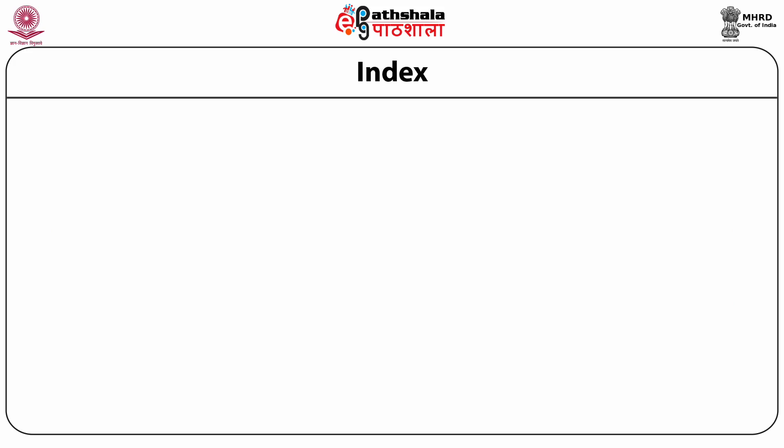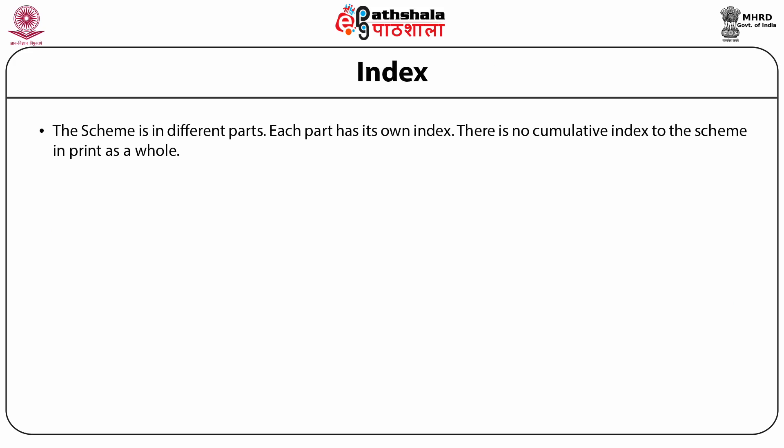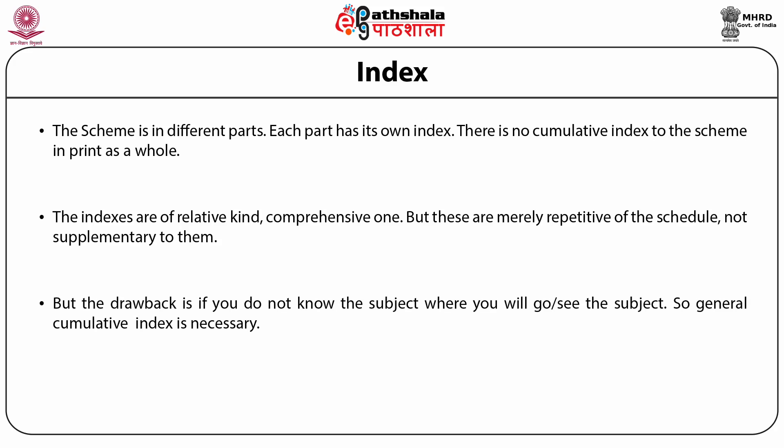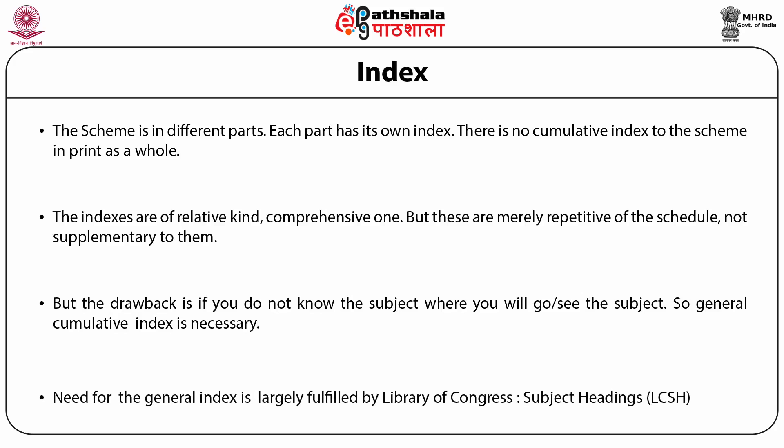Index: Index is an important part of any classification system. The Library of Congress scheme is in different parts and each part has its own index. There is no cumulative index to the scheme in print as a whole. The indexes are of a relative kind, comprehensive ones. But these are merely repetitive of the schedule, not supplementary to them. The drawback is if you do not know the subject, you won't know where to look. So a general cumulative index is necessary. The need for a general index is largely fulfilled by another publication, the Library of Congress Subject Headings.